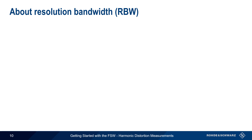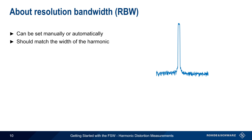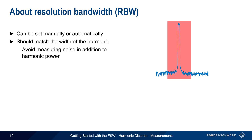Another important setting in harmonic distortion measurements is the resolution bandwidth, which can be set manually or automatically. As a general rule, resolution bandwidth should match the width of the harmonic. The green shaded area represents a resolution bandwidth filter of appropriate width. Using too wide of a resolution bandwidth, as shown in red, will result in surrounding noise power being added to the measured power of the harmonic.